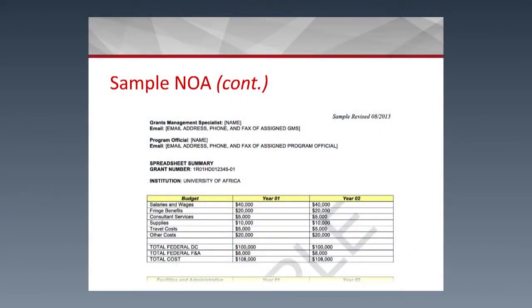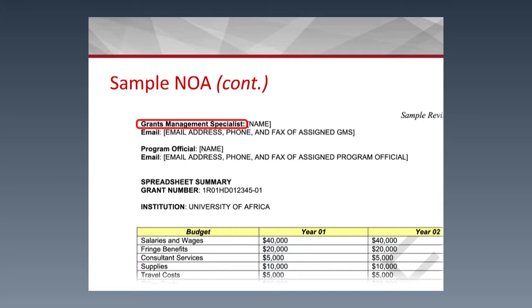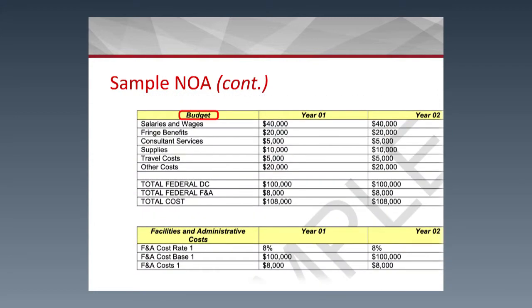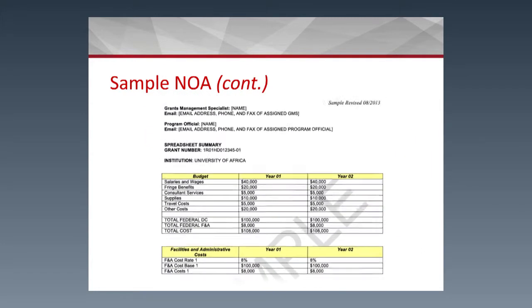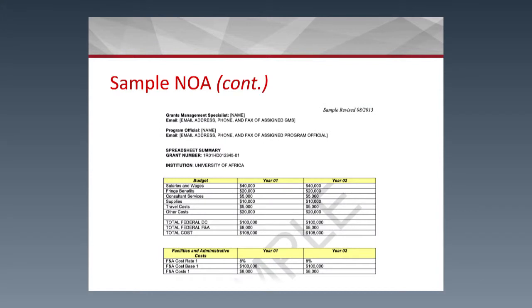Section 5 includes the staff contacts — the name, email, and telephone number of the grants specialist and the program person handling your award. It also includes a categorical or itemized budget, telling you which categories are funded and how much. It covers the F&A rate, base, and how it is calculated. This tells you how much you have for personnel, supplies, or travel, and shows where any reductions were taken, though it doesn't mean you cannot re-budget.